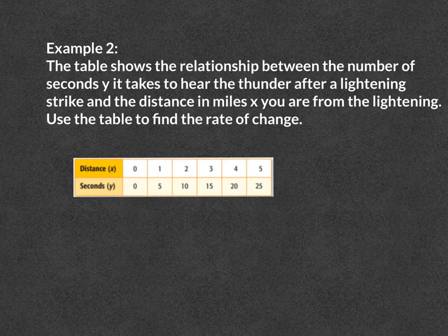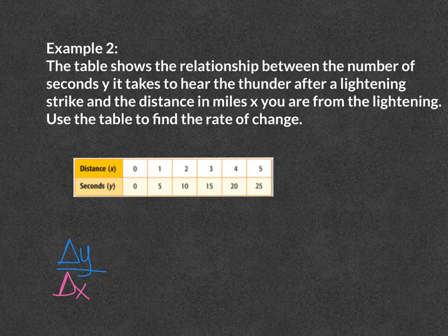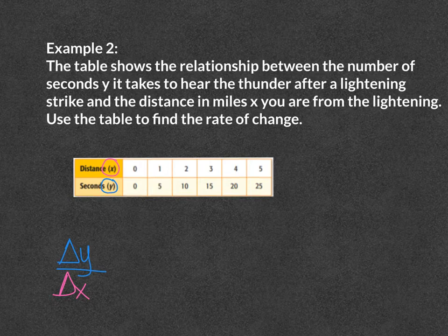Example number 2. The table shows the relationship between the number of seconds y it takes to hear the thunder after a lightning strike, and the distance in miles x you are from the lightning. Use the table to find the rate of change. Remember the rate of change is the change in y over the change in x. We are going to use a different method here. First we are going to label our rows — the distance in x are all of our x values, and the seconds in y are all of our y values. We are going to use the caret method to see how many we are increasing or decreasing by.